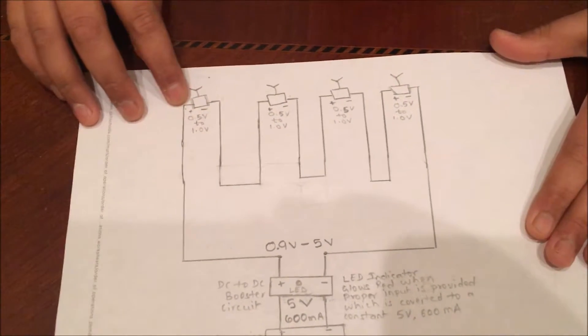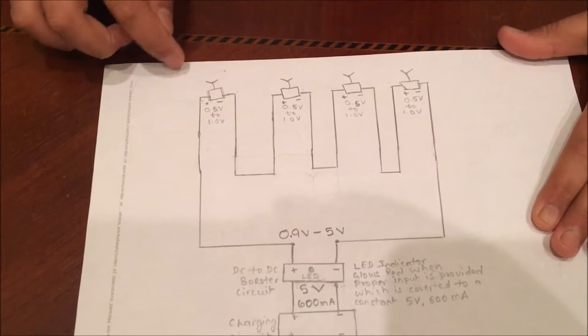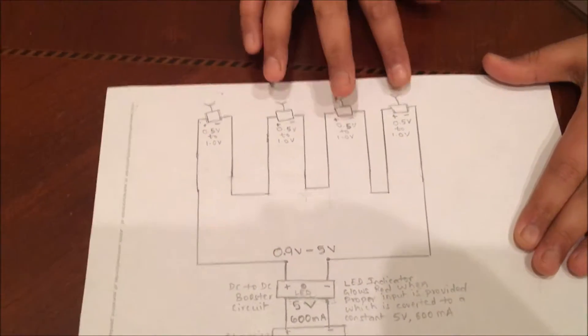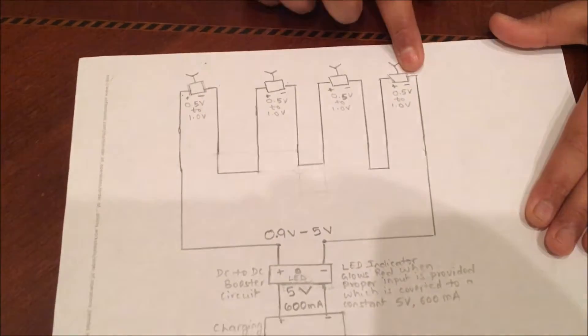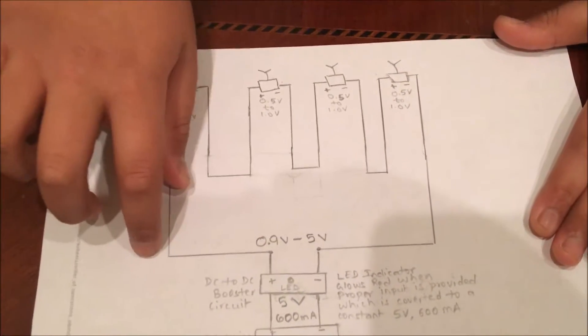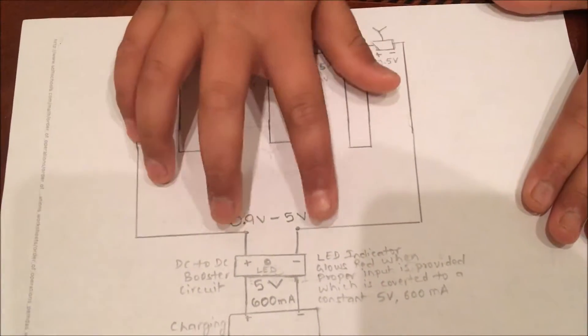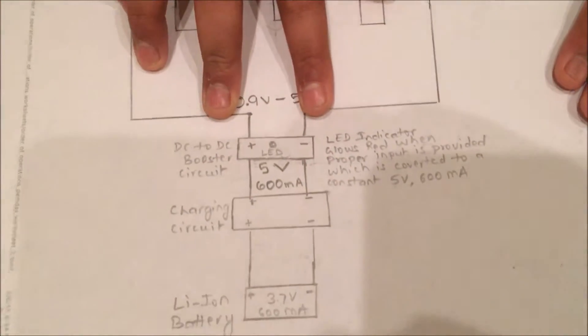So you make sure to bring the leads from the outermost edges and make sure it's a positive and a negative edge. So you bring it down and connect it to a DC to DC booster circuit.